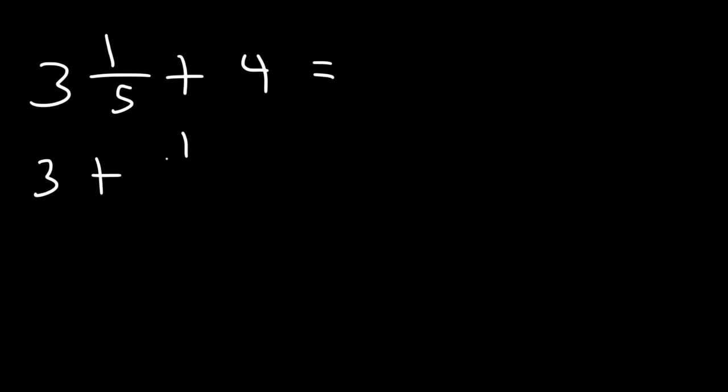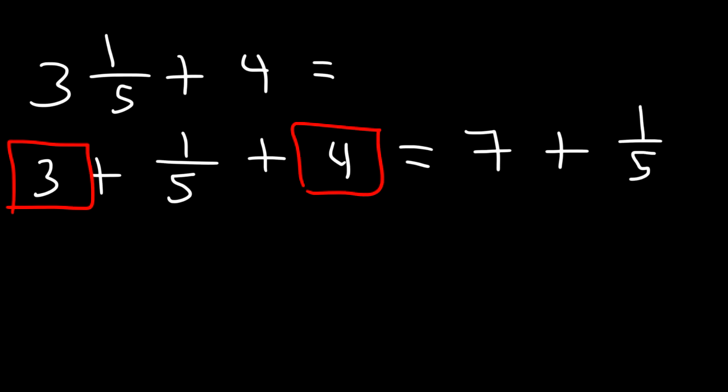3 and 1/5 is basically 3 plus 1 over 5, and so now we can add 3 plus 4. So 3 plus 4 is 7. 7 plus 1 over 5 is 7 and 1/5, and that's the answer for this example.